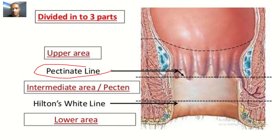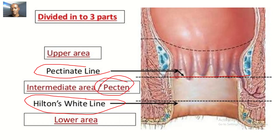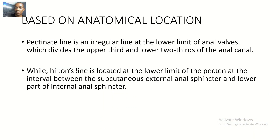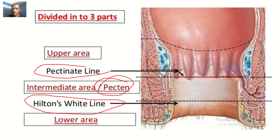This is the pectinate line. The pectinate line is below the anal valves. Based on anatomical location, the pectinate line is an irregular line at the lower limit of the anal valves, which divides the upper third and the lower two-thirds of the anal canal.